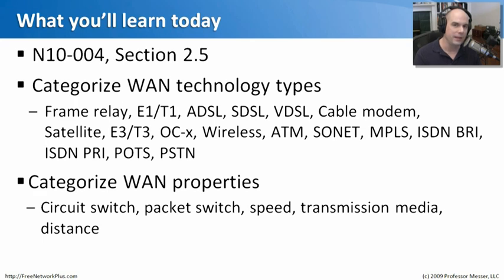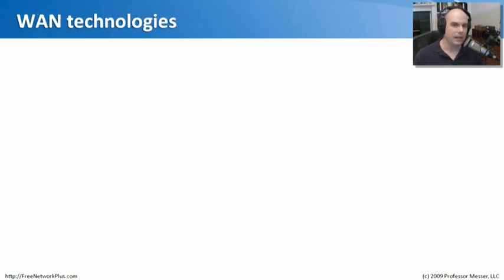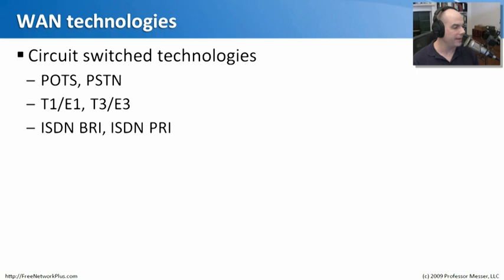I've separated them out to make these modules a little bit smaller for you. We'll talk about what circuit-switching is, and in the next module we'll talk about packet-switching. The WAN technologies we'll look at in this module include POTS and PSTN, T1/E1 and T3/E3, and finally ISDN BRI and ISDN PRI — all circuit-switched technologies over the WAN.